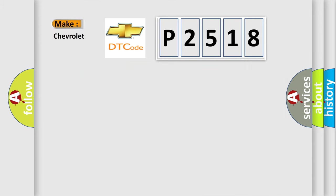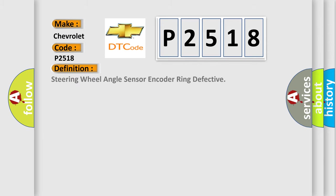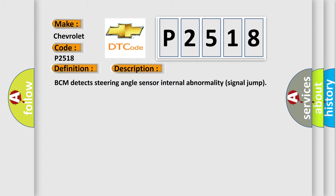So, what does the diagnostic trouble code P2518 interpret specifically? The basic definition is steering wheel angle sensor encoder ring defective. And now this is a short description of this DTC code. BCM detects steering angle sensor internal abnormality signal jump.